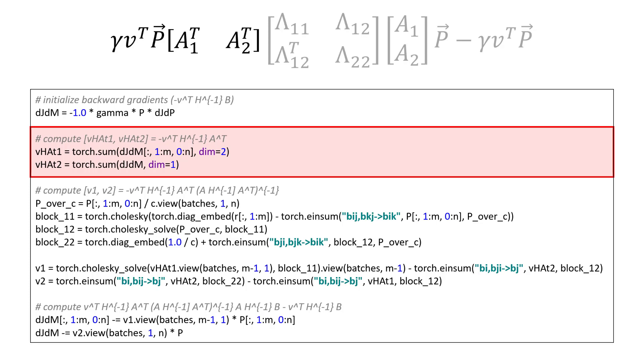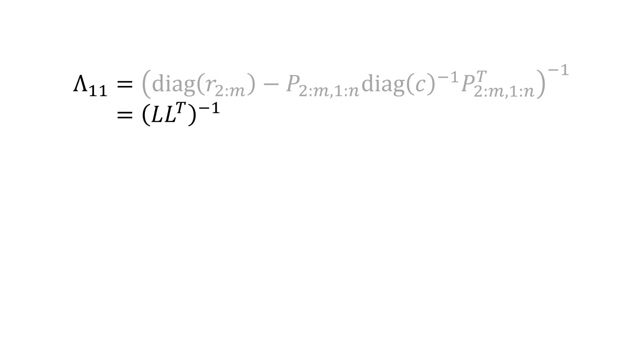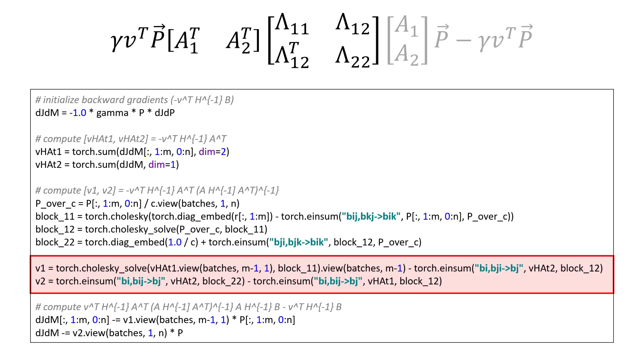We then compute the inverse of A h inverse A transpose using block matrix inversion, as discussed earlier. Here, instead of computing the inverse directly, we decompose the 1,1 block into a lower triangular matrix multiplied by its transpose via Cholesky factorization. We can then compute the 1,2 block using Cholesky solve, which makes the operation very efficient. With the blocks computed, we can perform matrix multiplication with the previously computed gamma v transpose pA term. Once again, we make use of Cholesky solve rather than directly inverting the 1,1 block, and once again we separate the calculation into two parts.